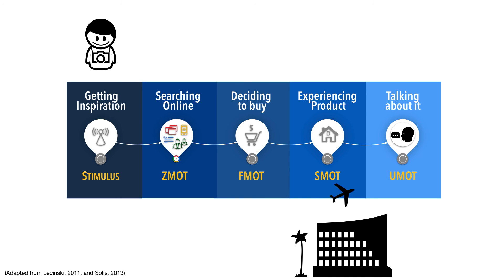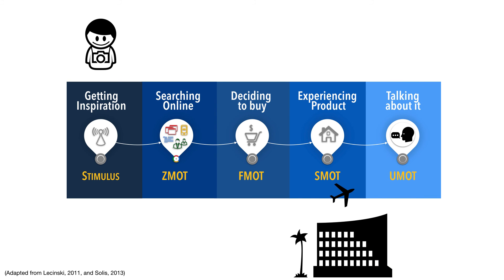Here is the full journey with each step of the theory and what each step means. We have added one more step called the Ultimate Moment of Truth, or UMOT. This extra step has been added by Brian Solis, who has separated the SMOT into two different steps. It makes sense, because as Lecinski sees it, the SMOT means two different acts — experiencing and sharing — so those two acts are separated into their respective stages.